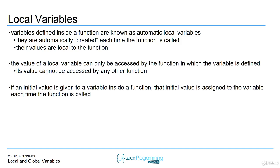If an initial value is given to a variable inside of a function, that initial value is assigned to the variable each time the function is called. If you want to retain a value across subsequent calls, there's a way to do that in C using a static variable inside a function. That's a more advanced concept, but it lets you keep the same data — for example, a counter of how many times a function was called. Without static, regular local variables will have new values each time.